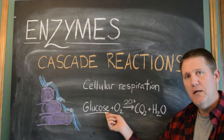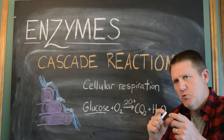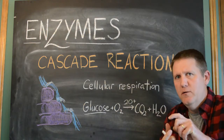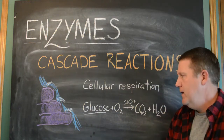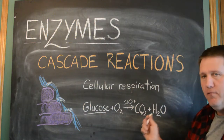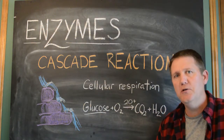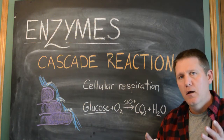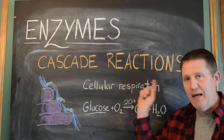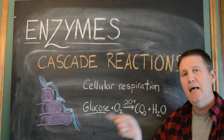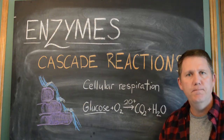The first enzyme takes a crack at glucose and just tweaks it a little bit. The next one tweaks it a little more. The next one tweaks it a little more — until, finally, in the end, you have carbon dioxide and water. It's not just one reaction.